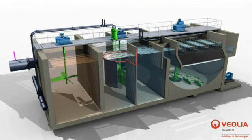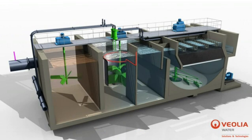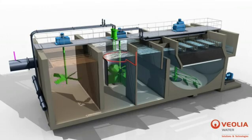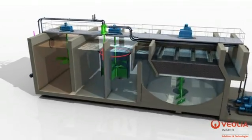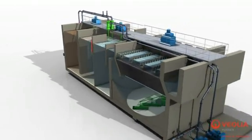in which water is flocculated with microsand and polymer in a turbomix draft tube. The microsand enhances the formation of robust flocks and acts as ballast, significantly increasing their settling velocity.